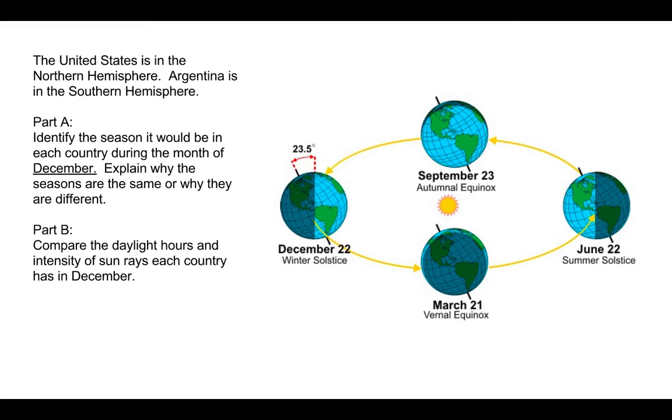Second part of that question asks you to explain why the seasons are the same or why they are different. In that explanation, you should have mentioned something about Earth's tilt. That is important. When Earth is tilted away from the sun, I'm going to look at this northern axis right here - it's tilted this way away from the sun. This northern hemisphere is in winter. Now down here, when I look at the southern axis, it's tilted towards the sun, so down here it is summer.